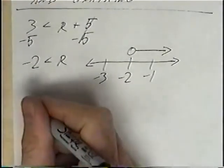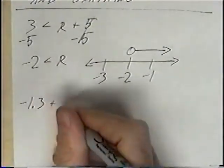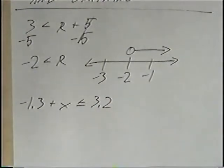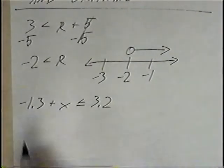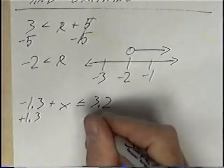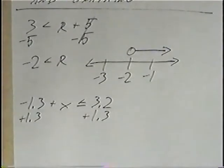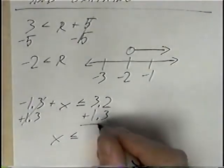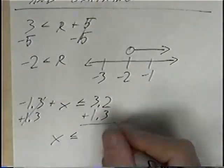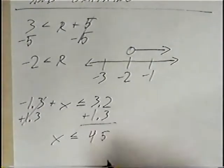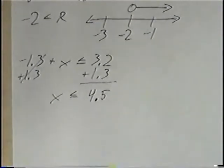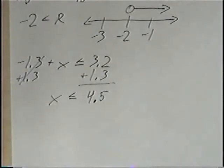The second question is negative 1.3 plus x is less than or equal to 3.2. The first step is to get x by itself. To get rid of negative 1.3, we add 1.3 to both sides. The 1.3s cancel, leaving x is less than or equal to. Adding the decimals — 2 plus 3 is 5, 3 plus 1 is 4, and lining up the decimals gives us 4.5. So x is less than or equal to 4.5.